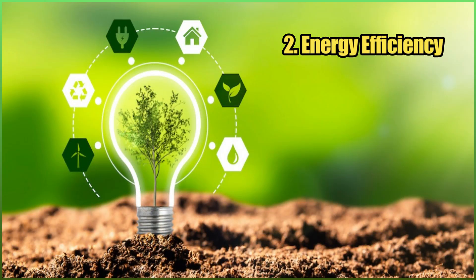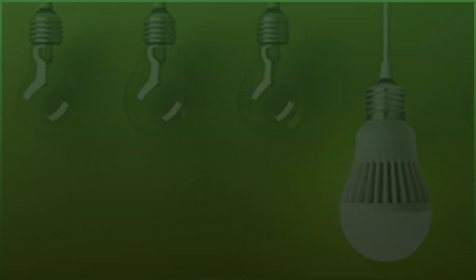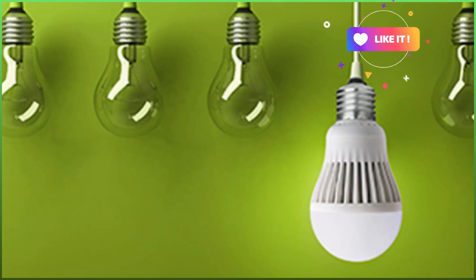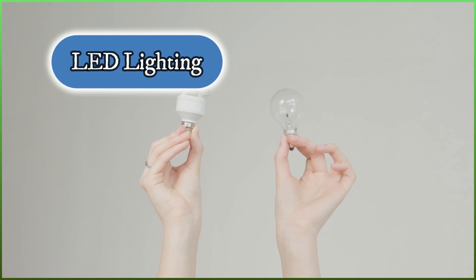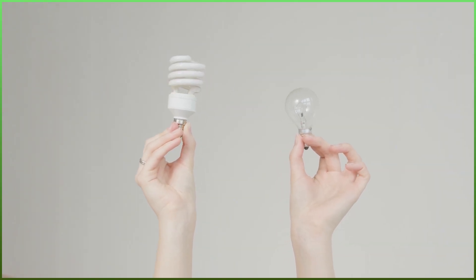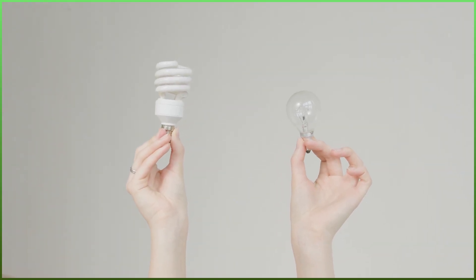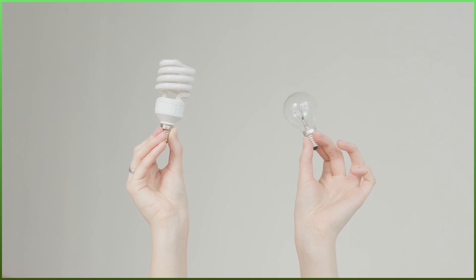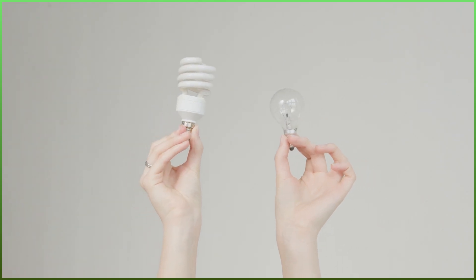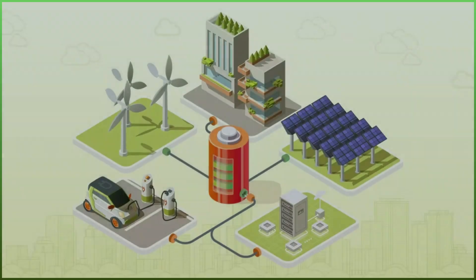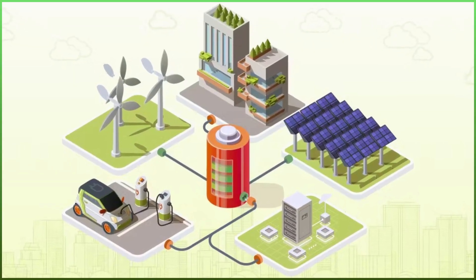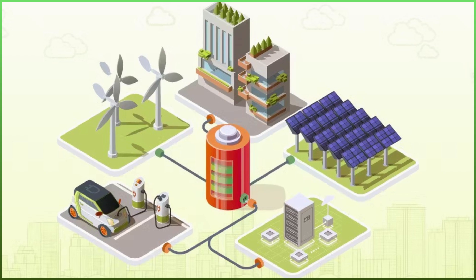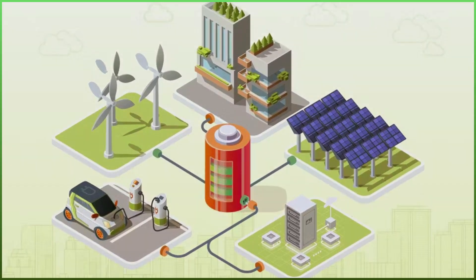Number two: energy efficiency — technologies and practices that reduce energy consumption for a given output. Examples include LED lighting, highly energy-efficient light bulbs that consume significantly less power than traditional incandescent or fluorescent lights, and smart grids, which are advanced electricity networks that optimize energy distribution, integrate renewable sources efficiently, and allow for better management of energy demand.